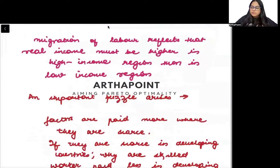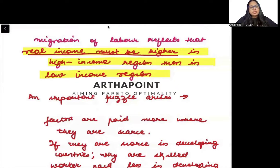Migration of labor reflects that real income must be higher in high income region than in low income region. To migrate kyun kar raha labor? Because income is much more in the richer region as compared to the poor region.